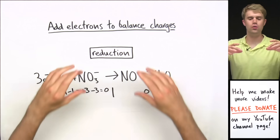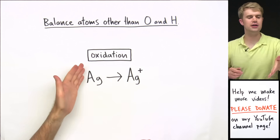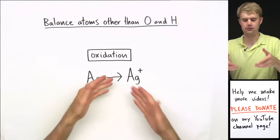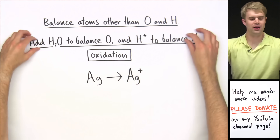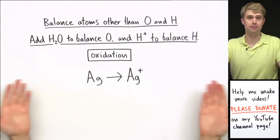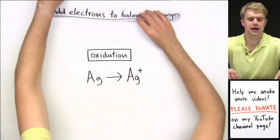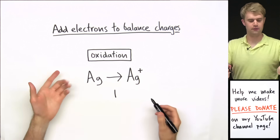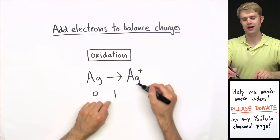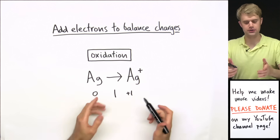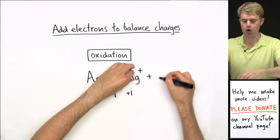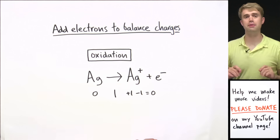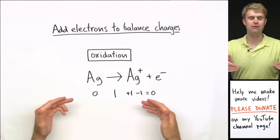Now I have to do the same balancing routine with the oxidation half reaction. We have one silver atom on each side, so atoms are already balanced. There are no oxygen or hydrogen atoms, so we don't need to add water or H⁺. For charges: on the reactant side, Ag has no charge (zero); on the product side, Ag⁺ has a charge of plus one. To cancel out that plus one, I add one electron to the product side: plus one minus one equals zero. The charge is balanced, and we're ready to combine with the reduction half reaction.